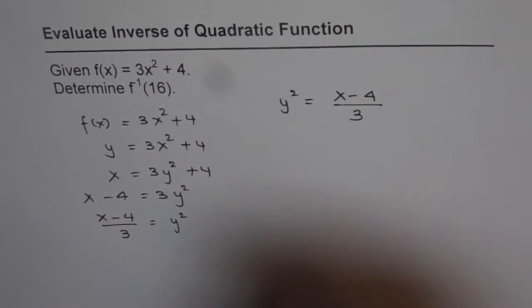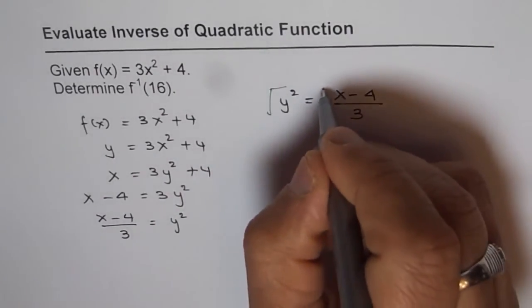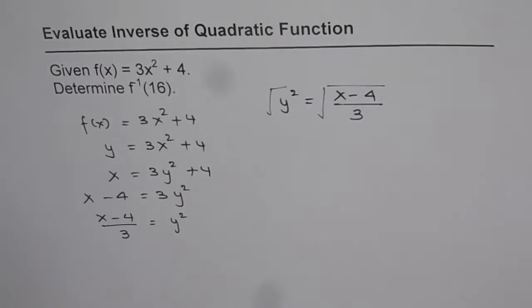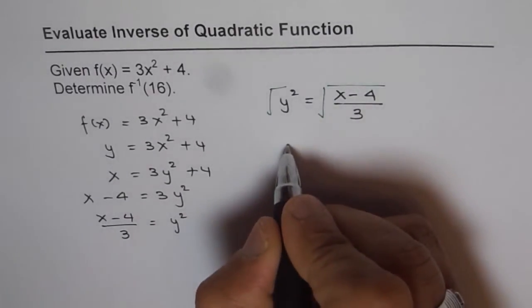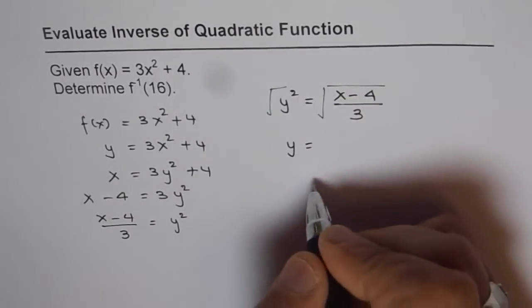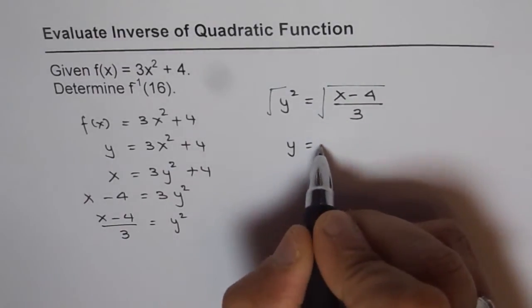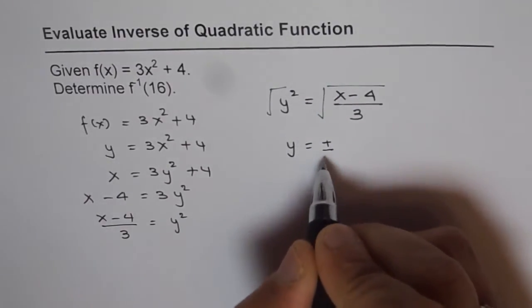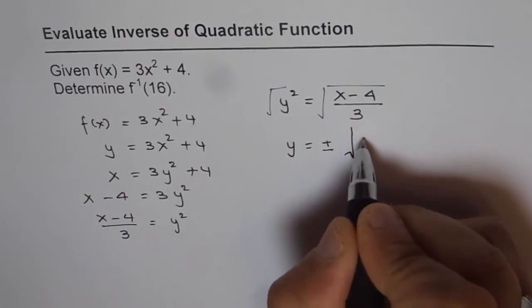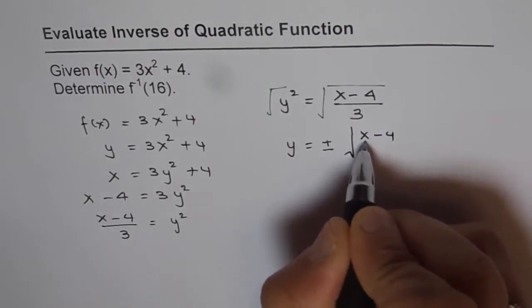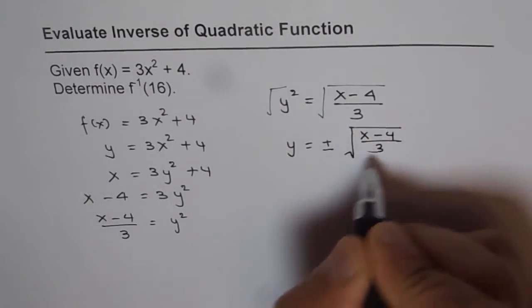So what we do here, that is, we square root both sides. But when we square root, we get y here. What do we get here? Whenever you square root, you have to write plus and minus. Don't forget that part. Plus and minus square root of x minus 4 over 3. This is what you get.